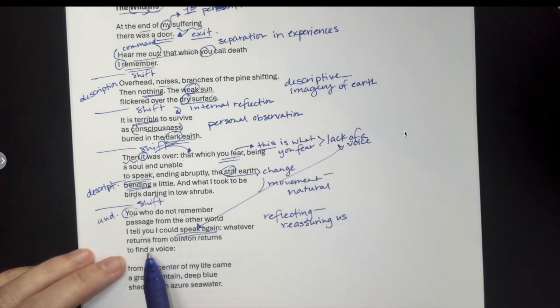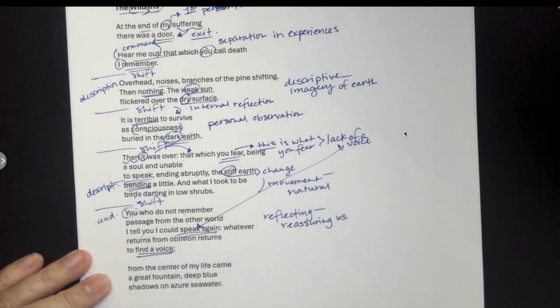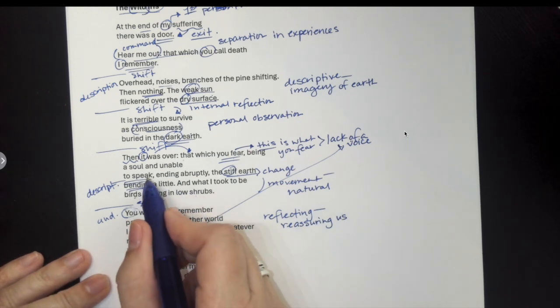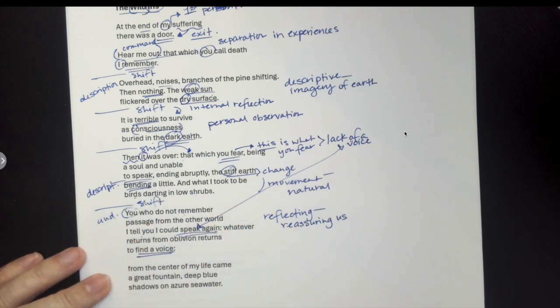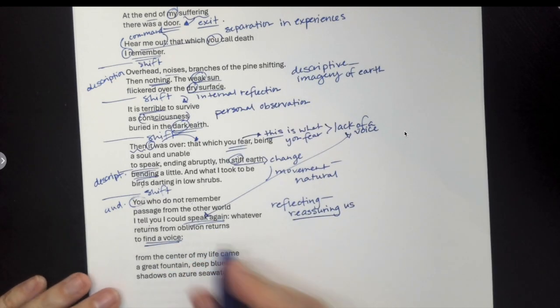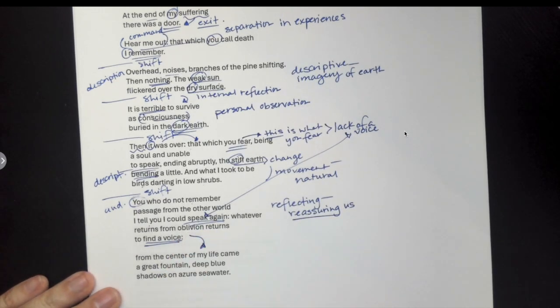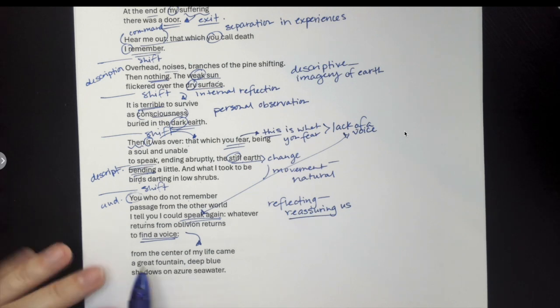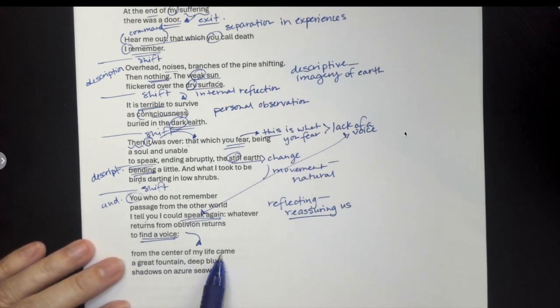Whatever returns from oblivion returns to find a voice. So this idea of not being able to speak, she's telling us that we don't have to fear that. And then we see kind of how that voice, quote unquote voice, how that is given to her and what that voice looks like. She says, from the center of my life came a great fountain, deep blue shadows on azure seawater.